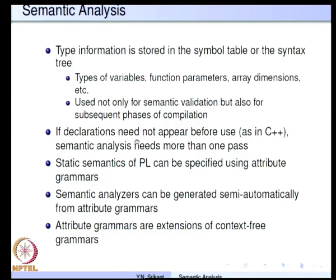If declarations need not appear before use — as in C++ — then semantic analysis requires more than one pass. When you write a class declaration in C++, you put the member functions and then usually write all the declarations of variables used within the methods. When we try to parse the methods or member functions, we will not know the type of the variables because the declarations appear later. The only way to handle it is to go through the program once to create the symbol table, and then go through a second time to perform semantic analysis.